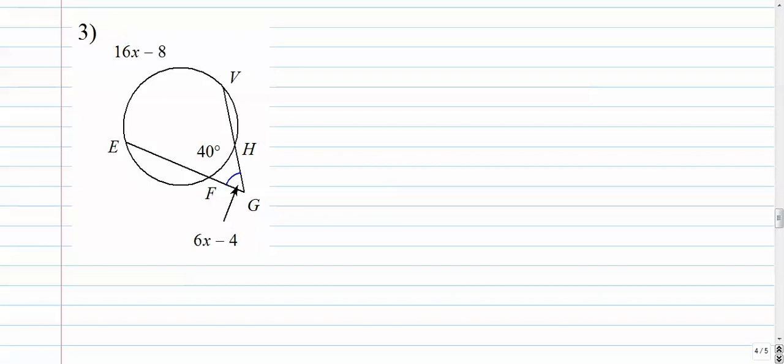We can add some algebra in there as well. It doesn't change the formula though. Angle equals faraway arc minus close arc over 2. In this case, the angle is an algebraic expression. The faraway arc is 16x minus 8 minus the close arc is 40 over 2.